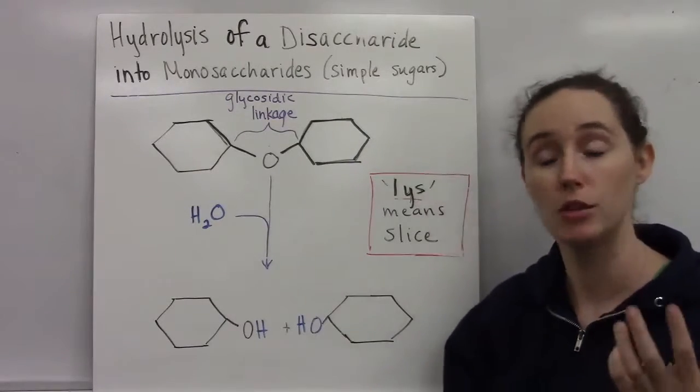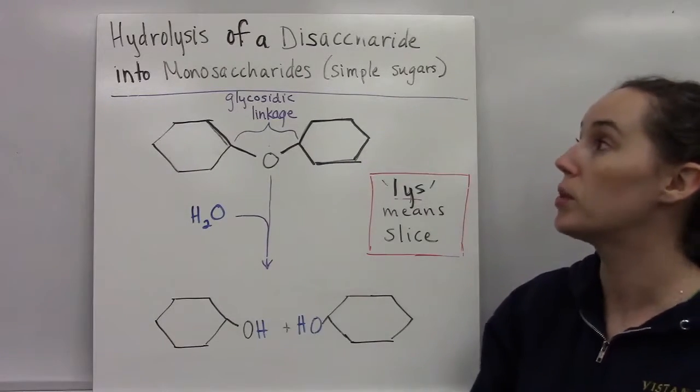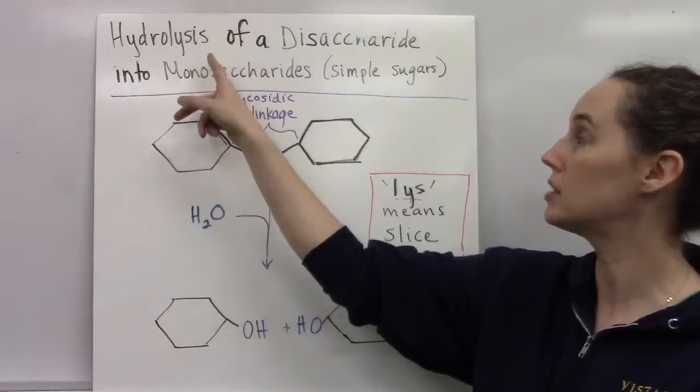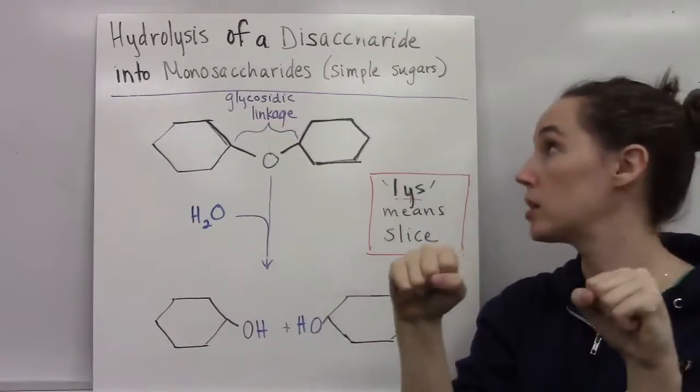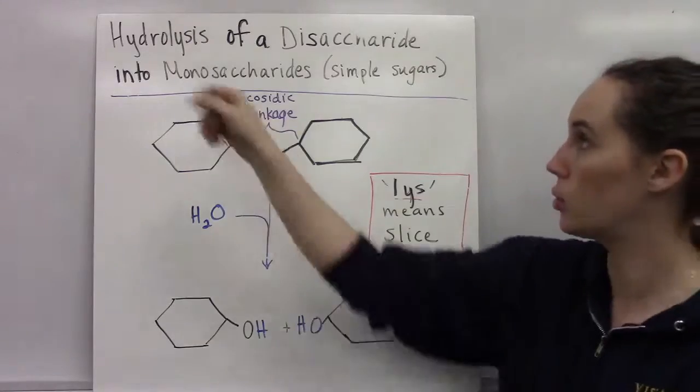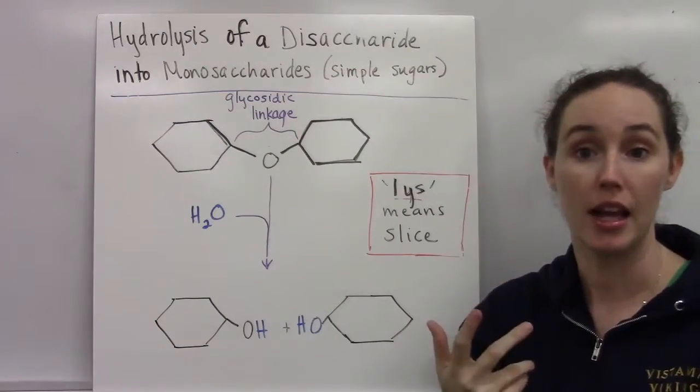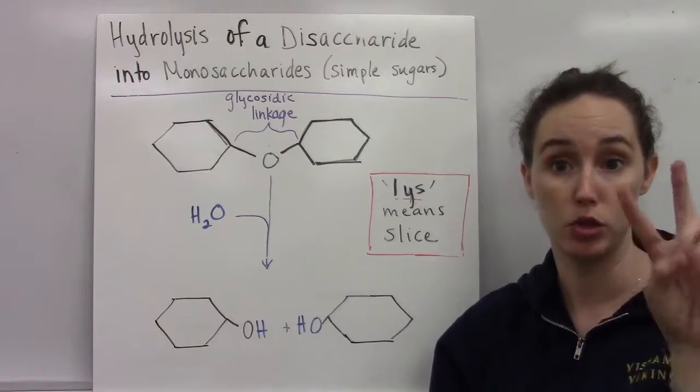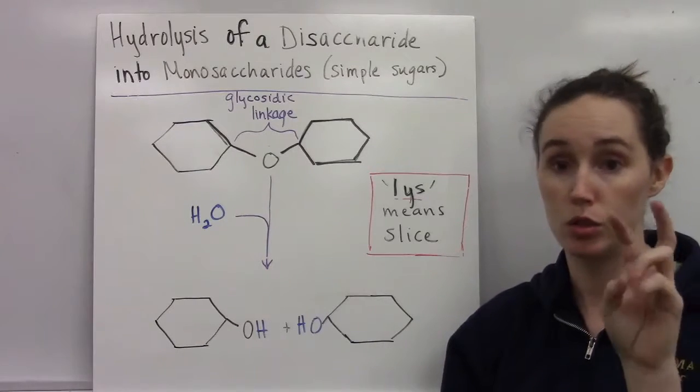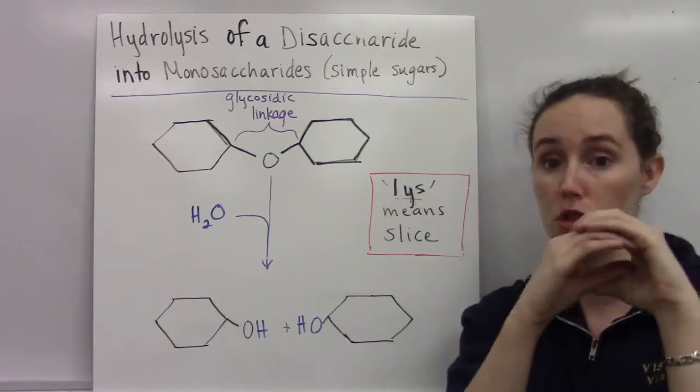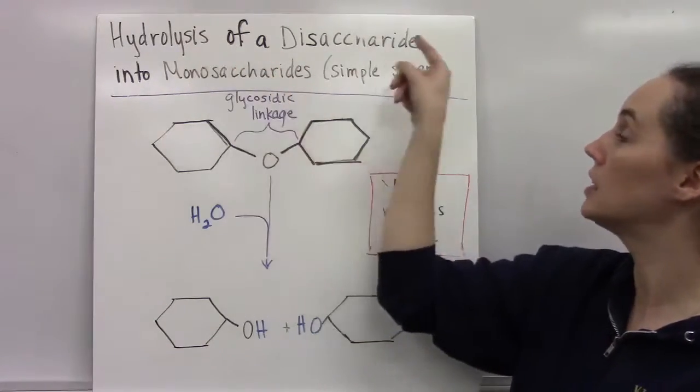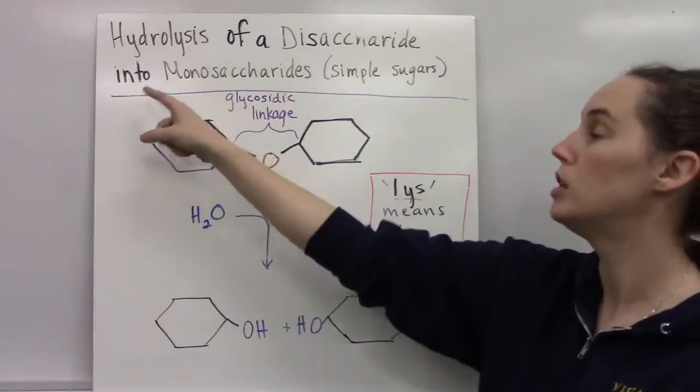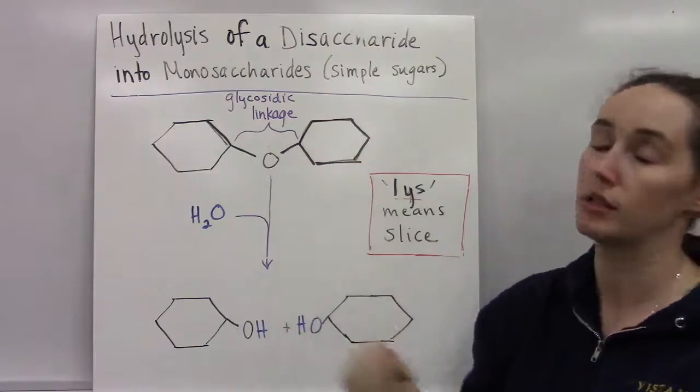And here's an example of a hydrolysis reaction. Remember, hydrolysis, we're breaking something apart. We're breaking a large molecule apart into two smaller molecules. So we're hydrolyzing a disaccharide, that's a carbohydrate, a sugar that's made of two monosaccharides, two simple sugars, right? And so we're breaking, we're hydrolyzing a disaccharide into two small monosaccharides, or simple sugars.